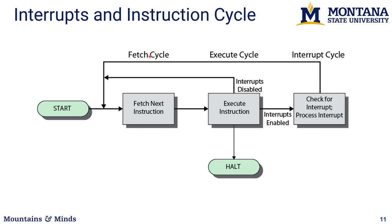Looking at our cycle again: we now have a fetch cycle, an execute cycle, and an interrupt cycle. We fetch an instruction, execute it, then check the hardware to see if an interrupt has been triggered. If so, we go into the interrupt cycle, process it, and potentially schedule the next instruction from the interrupt code. At a high level, the computer just keeps executing instructions and checking if it needs to switch to handle hardware events.